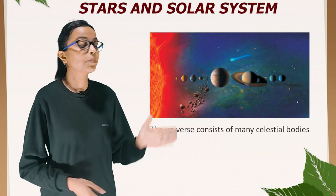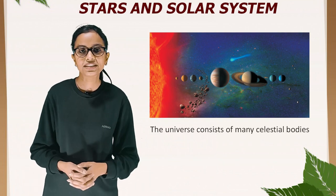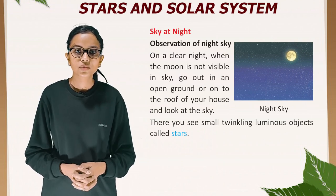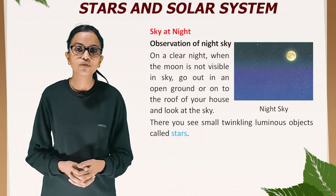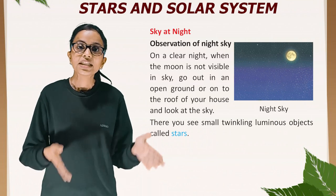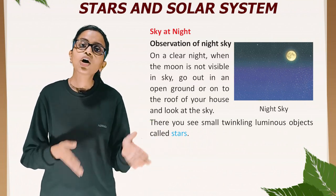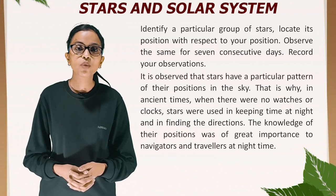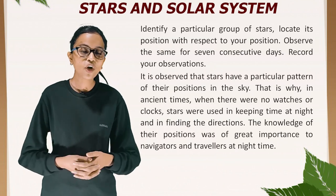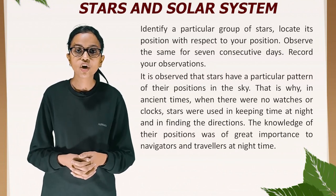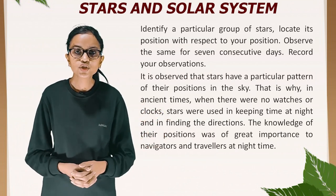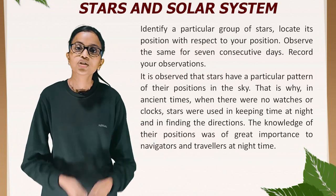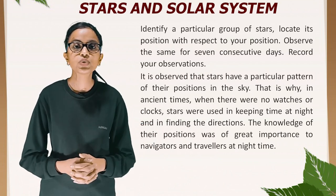The universe consists of many celestial bodies. On a clear night when the moon is not visible, go out in an open ground or onto the roof of your house and look at the sky. You will see small twinkling luminous objects called stars. Observe a particular group of stars for seven consecutive days and record your observations. Stars have a particular pattern of their positions in the sky. That is why in ancient times, when there were no watches or clocks, stars were used for keeping time at night and finding directions. Knowledge of their positions was of great importance to navigators and travelers.